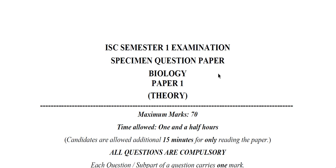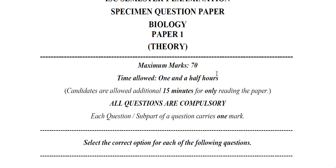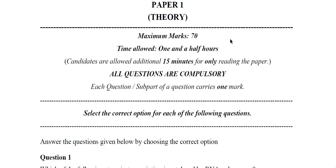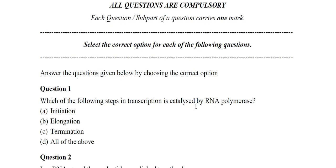Hello students. Today through this video I am going to discuss the ISC semester one examination specimen question paper of Biology, Paper 1 Theory. Maximum marks: 70, time allowed: one and a half hours. Candidates are allowed additional 15 minutes for only reading the paper. All questions are compulsory and each question or sub-part carries one mark.